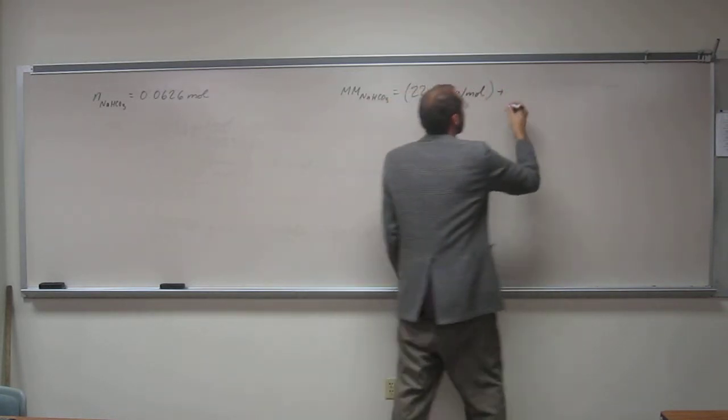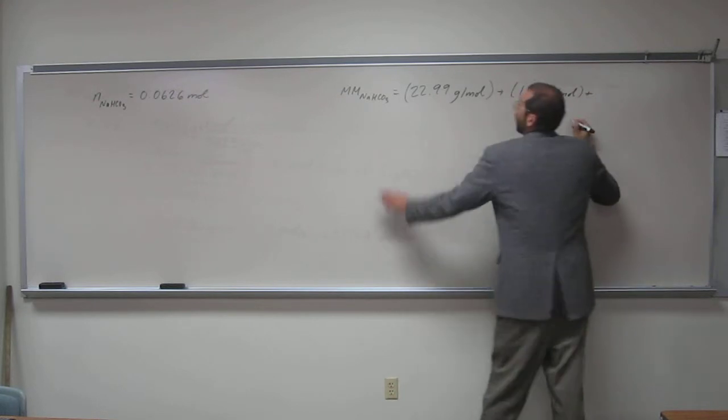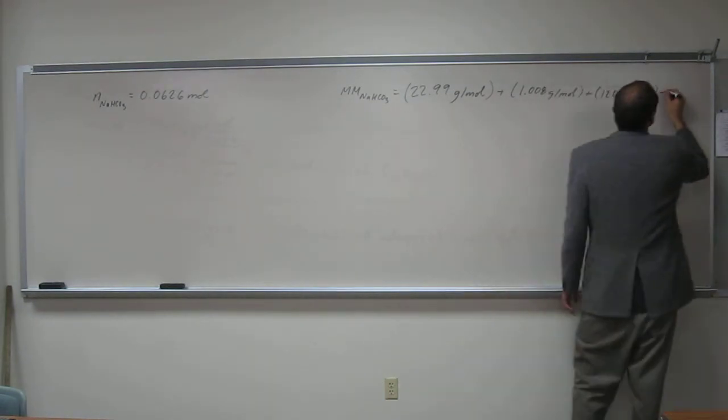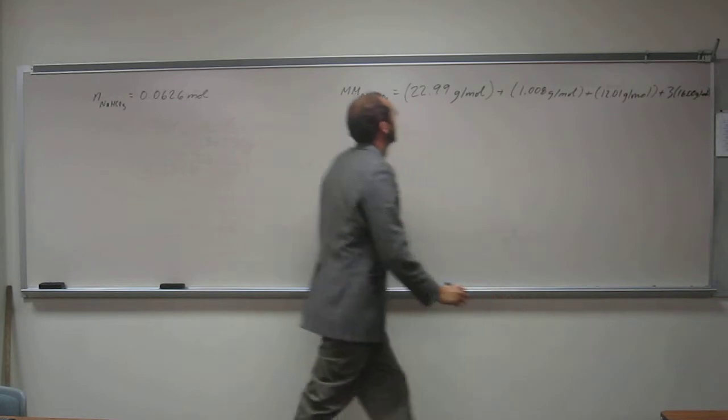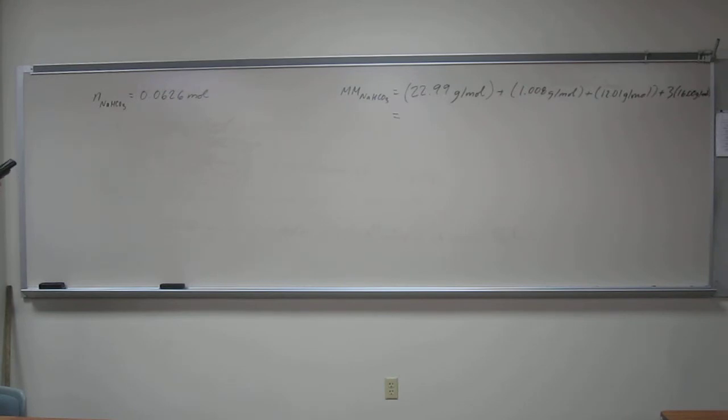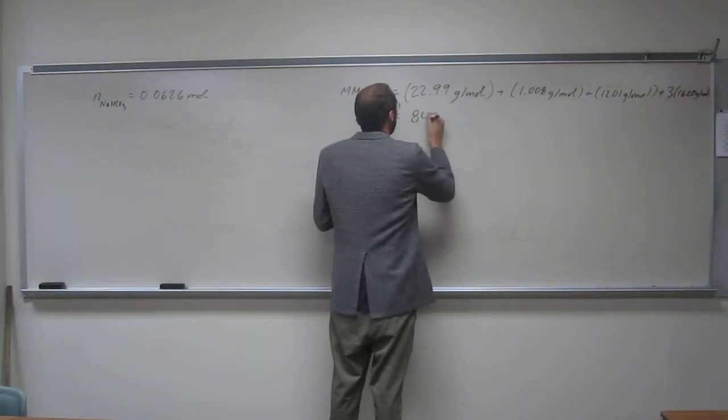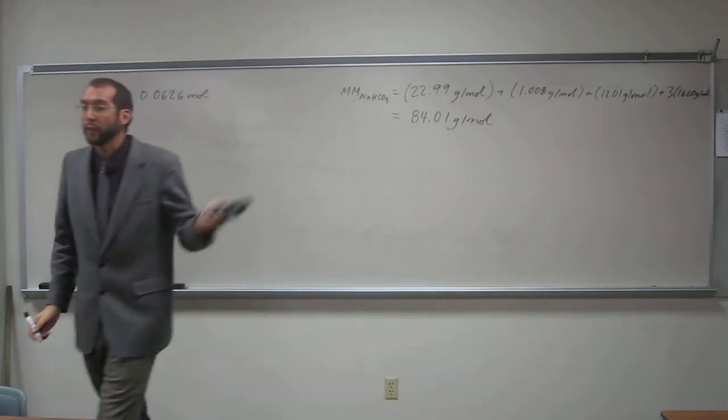So we figure out the molar mass: plus one hydrogen, plus one carbon, plus three oxygens. Two digits after the decimal gives us 84.01 grams per mole. That's the molar mass of sodium bicarbonate.